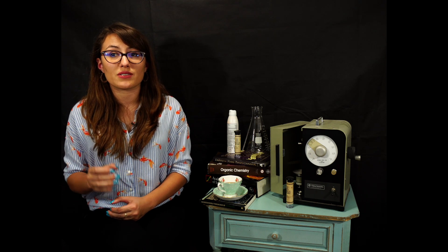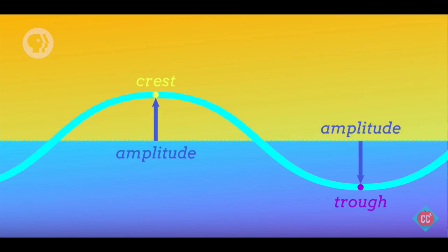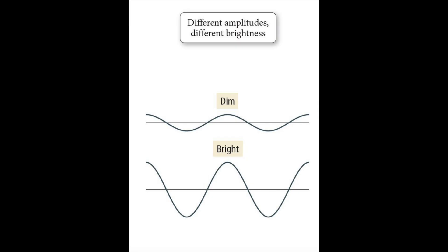To describe a wave, we need to first go over some key terms. A wave is characterized by its amplitude and wavelength. Amplitude is the vertical height of a crest, which determines how intense or bright a light is. So the greater the amplitude, the greater the intensity will be.